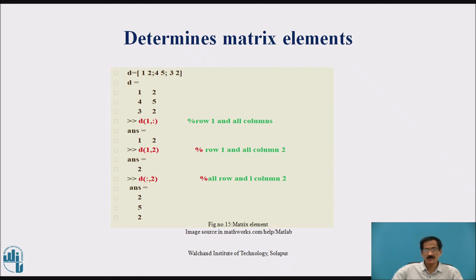Determine matrix elements: d is equal to 1, 2, 4, 5, 3, 2. If I write a command d into a round bracket 1 comma colon will display row 1 and all columns. 1 comma colon means 1 stands for row number 1, then comma semicolon double colon indicates that in the first row you have to consider all the values from columns.